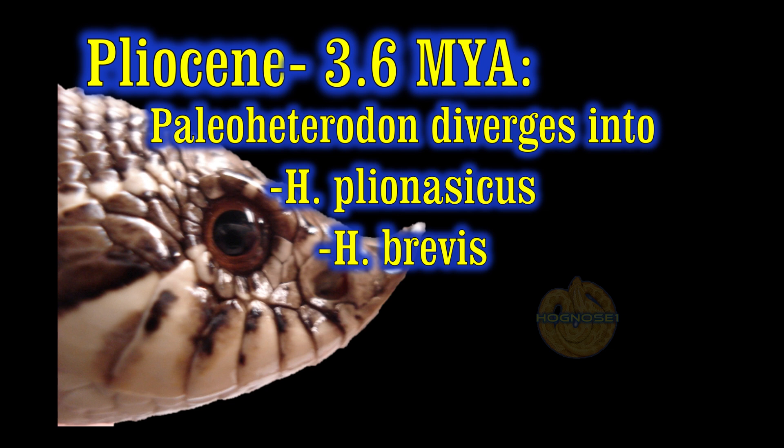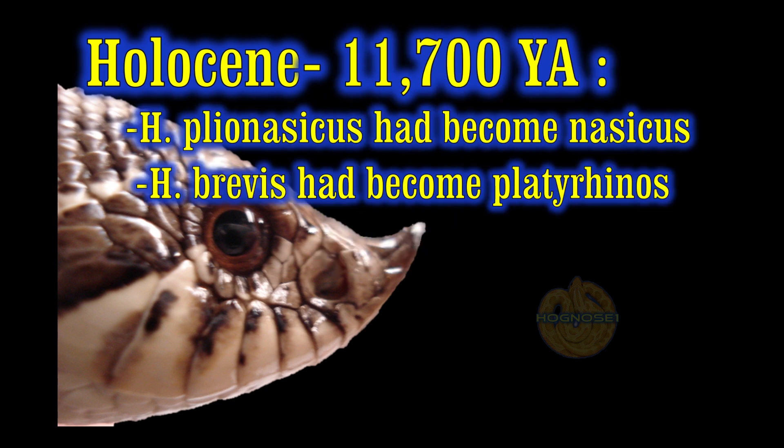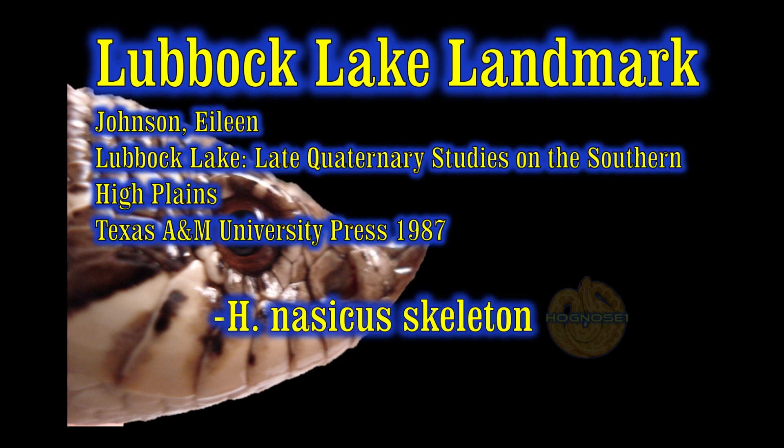As we move on into the Holocene — the most recent epoch, a time period of 11,700 years ago through present — we see very little physiological change in nasicus. Eileen Johnson, working in association with Texas Tech University in Lubbock, Texas at an old Clovis Paleo-Indian occupation site, discovered skeletal remains and fragments from nasicus. That soil sample is aged at between 10,000 and 11,700 years, and by that time nasicus had already developed everything it needed for its survival in our environment.